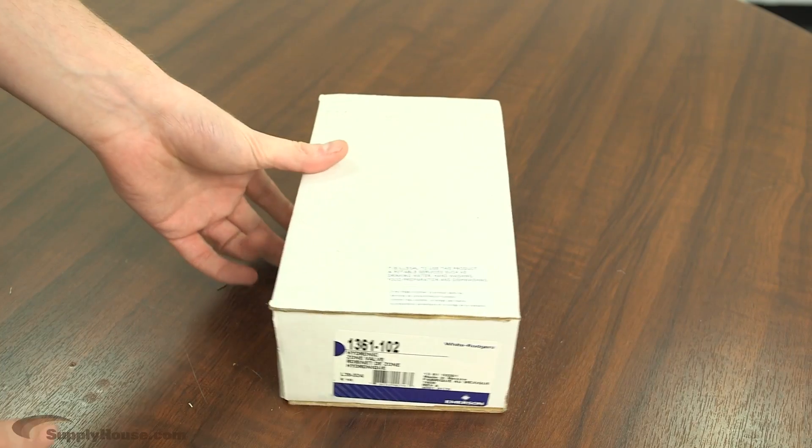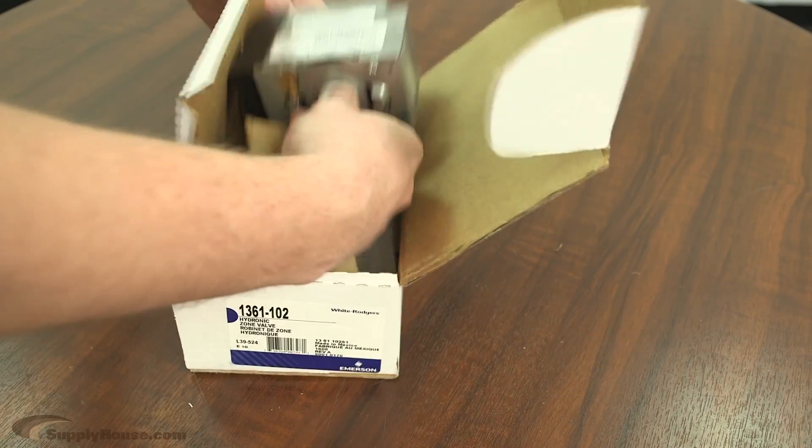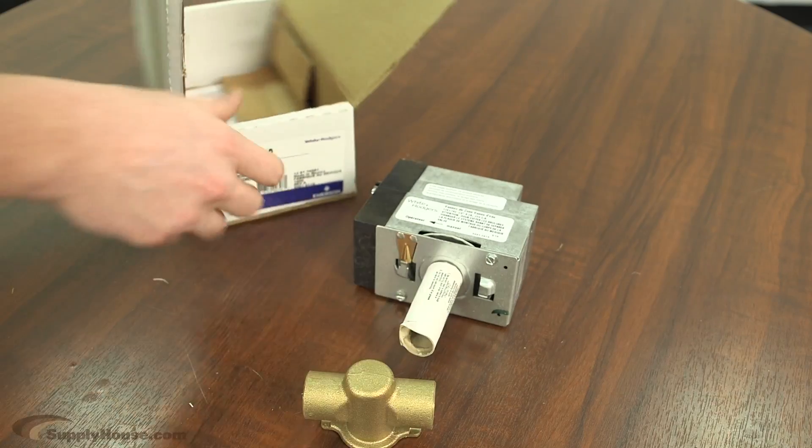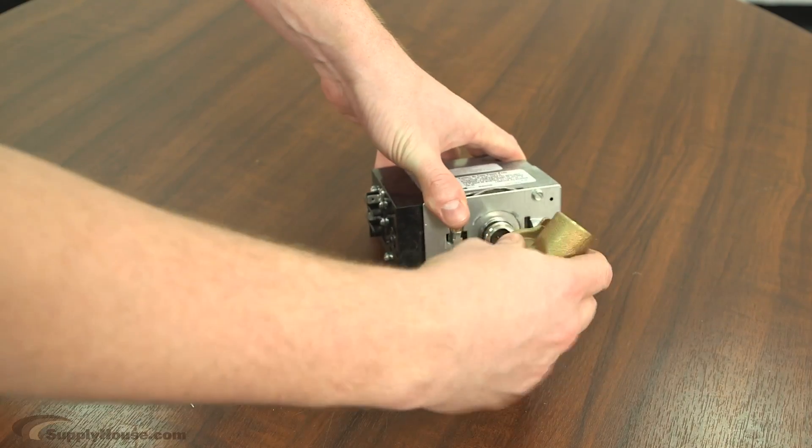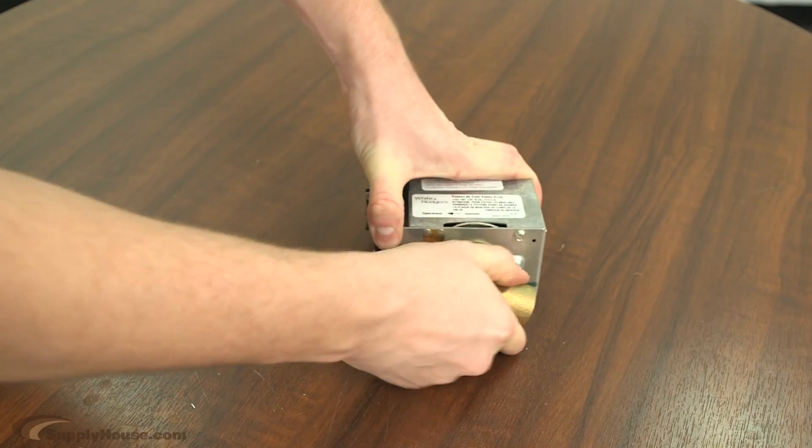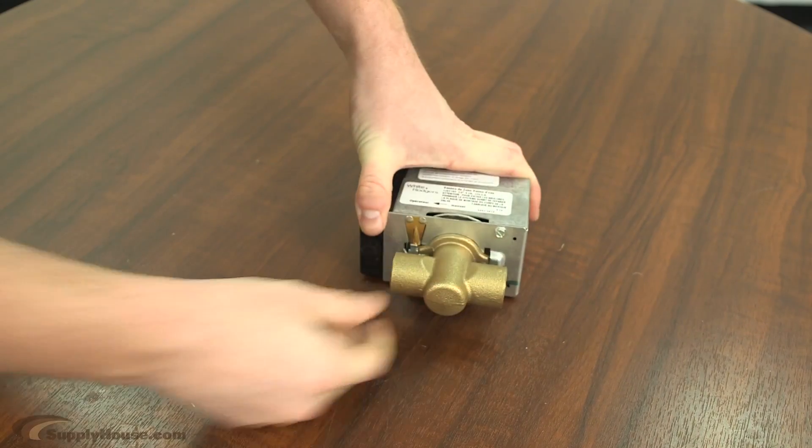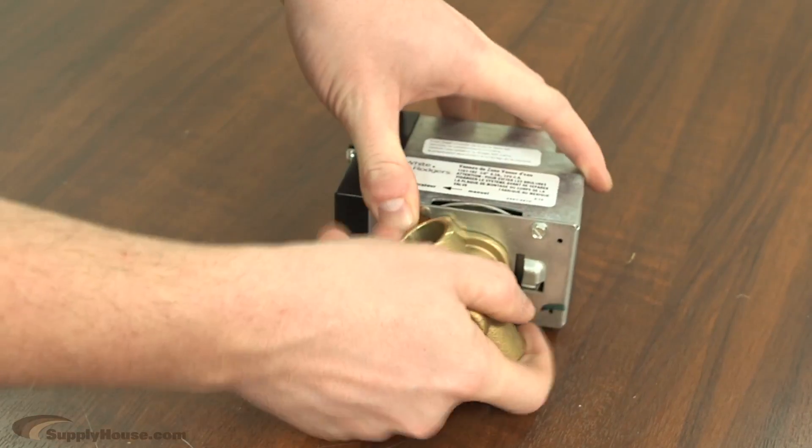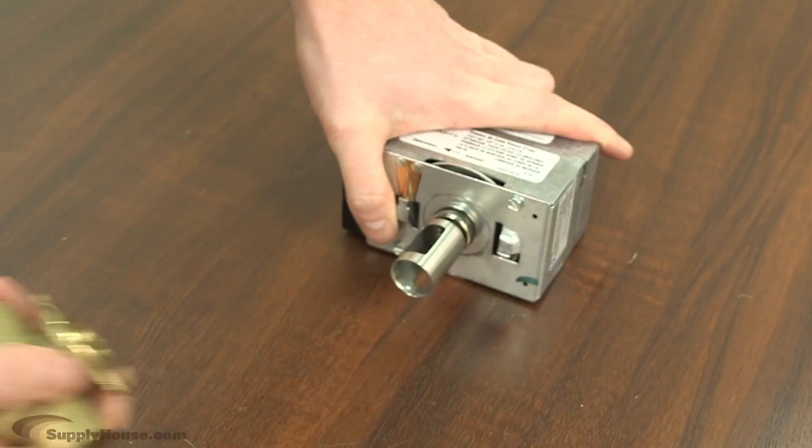Here we have the White Rogers zone valves. They ship with the body and the actuator separate as well. So on these guys, you slide the body, and then push it down and twist it into these metal channels here. To release it, you press down this little tab, and the body twists and comes back out.